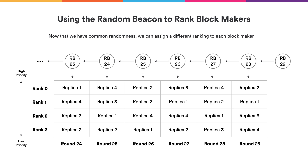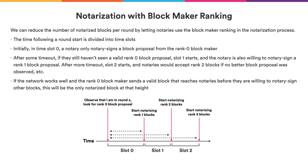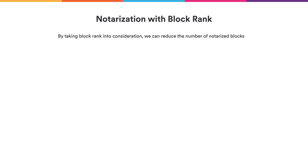We use this block maker ranking to further enhance notary behavior. When a notary enters a round, it starts a timer. For the first period, it only looks to create a notarization share for the block from the rank-zero block maker. Only if that fails after a certain amount of time is it willing to fall back to the rank-one block maker, and after another timeout, to rank-two or rank-three. The goal is to reduce the number of notarized blocks per round, with many rounds having only one notarized block from the rank-zero block maker.